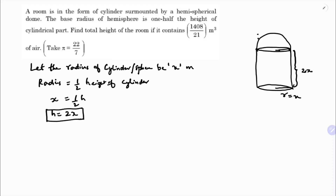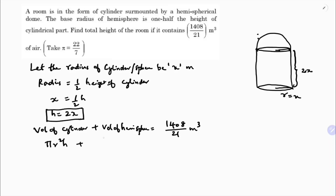Now they give the volume of the total room. So volume equals volume of cylinder plus volume of hemisphere. The height of the cylinder is 2x, so volume of cylinder is π·x²·(2x), and we set the total equal to 1408/21.